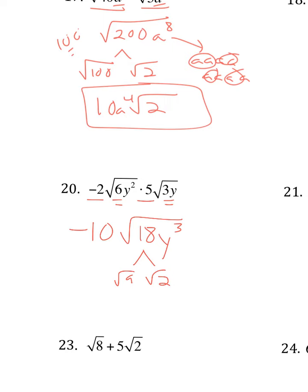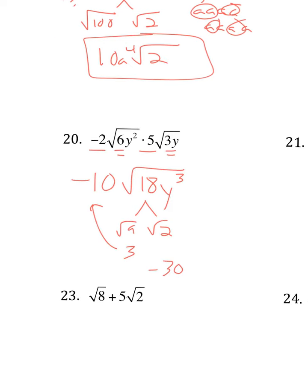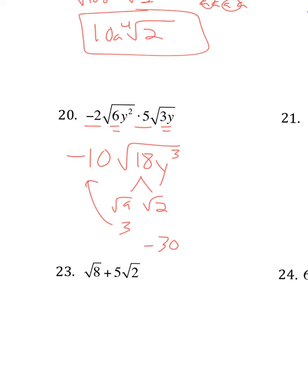That's just 3. But you still have negative 10 with it. So you really have negative 30 square root of 2.